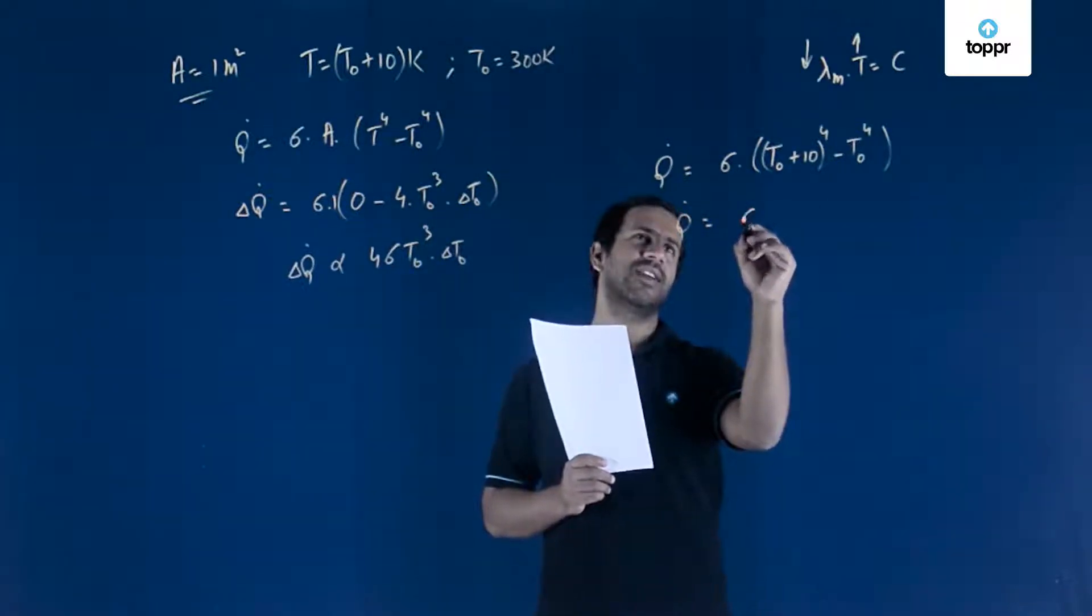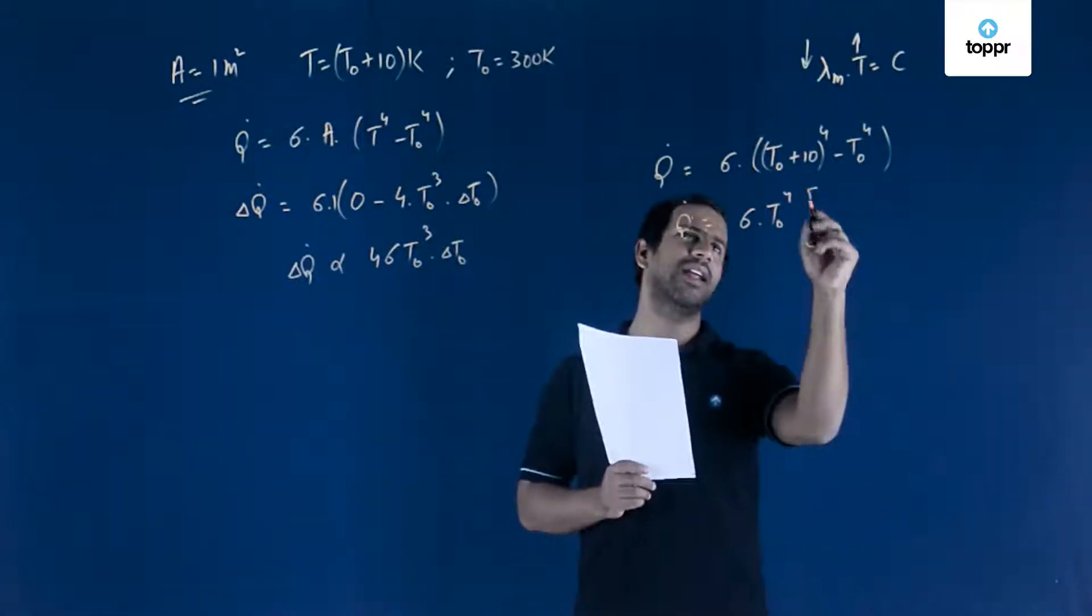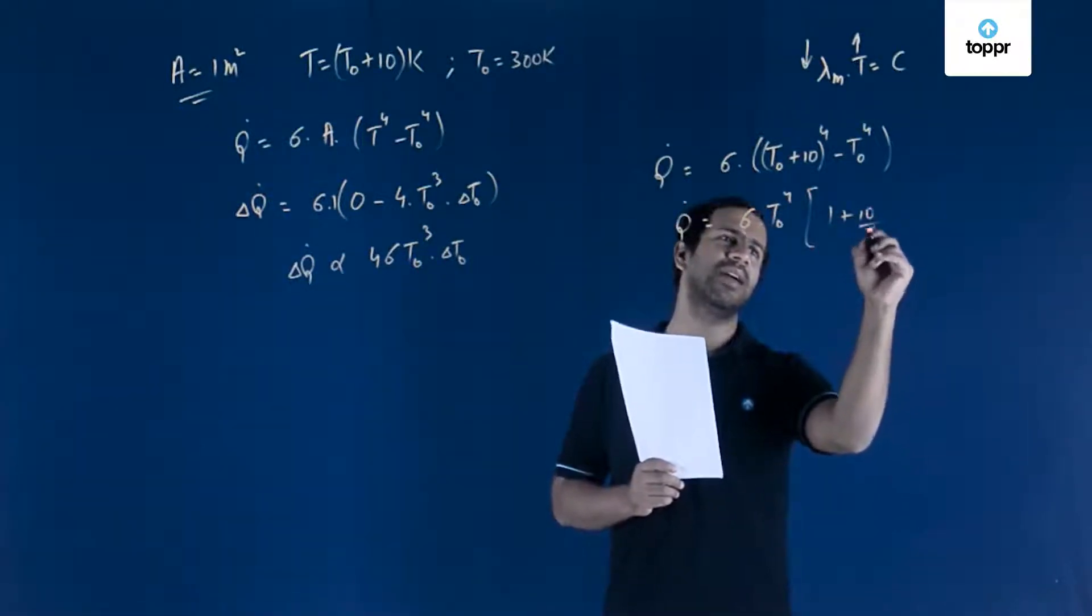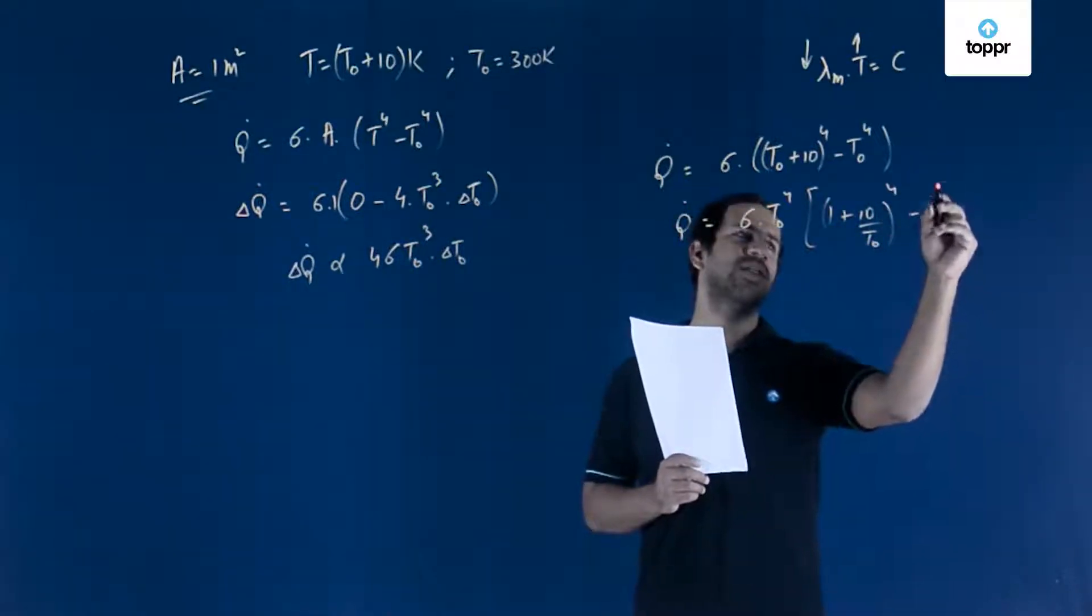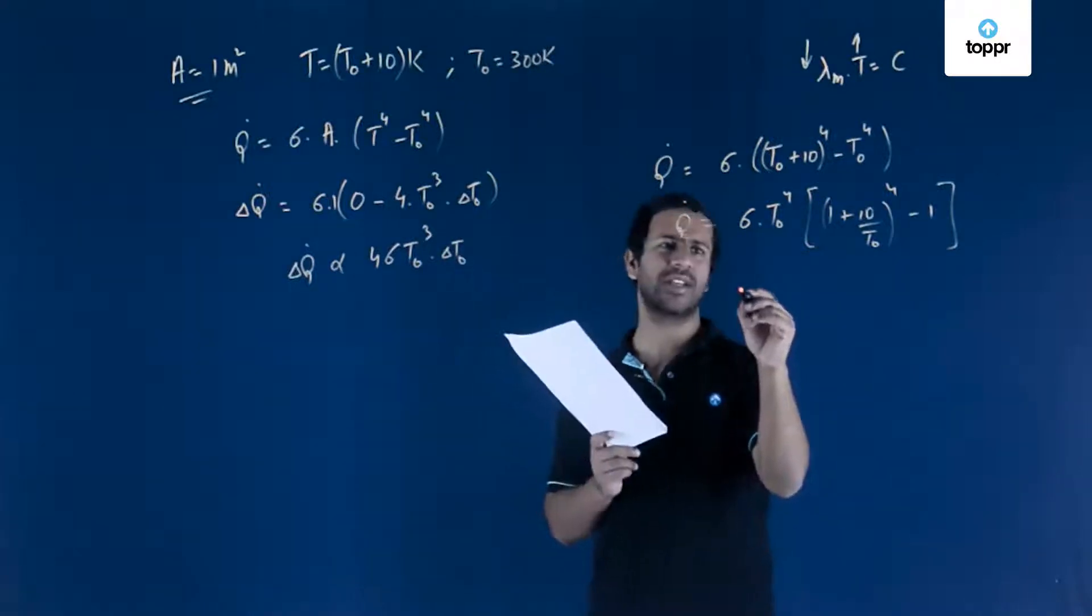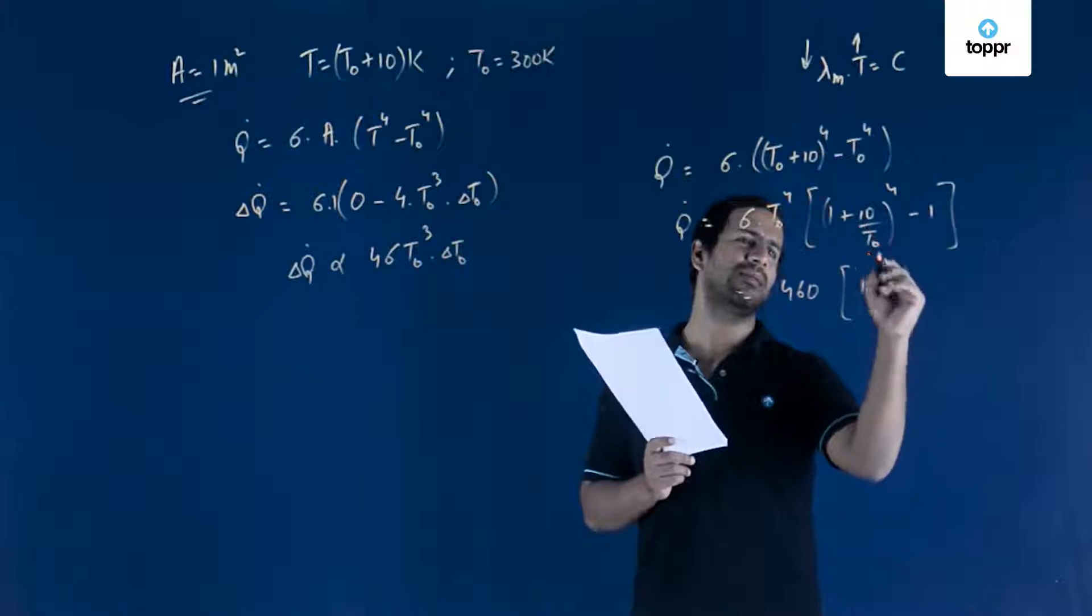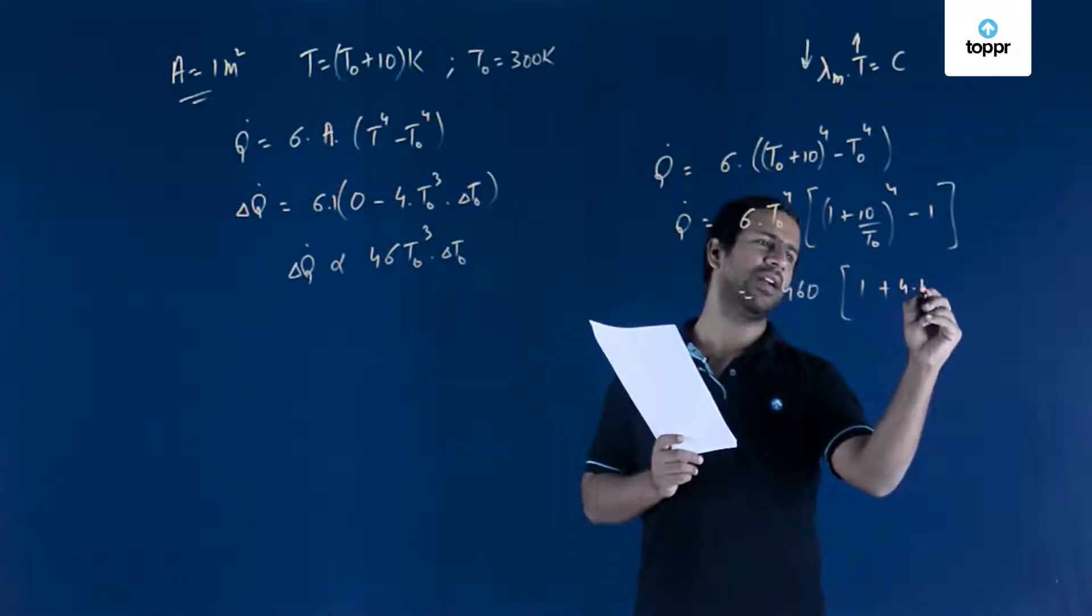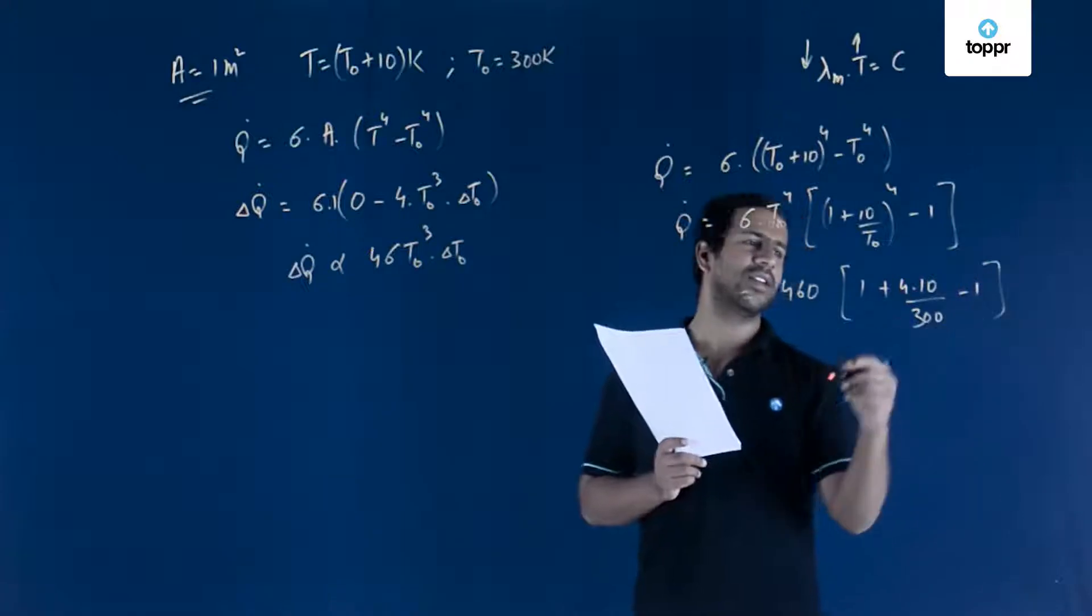Here you have (1 plus 10 by T0) raised to the power 4 minus 1. Sigma T0 raised to 4 is given to be 460. This into (1 plus 4 into 10 by T0, which is 300) minus 1. You are left with 460 into 4 into 10 by 300.